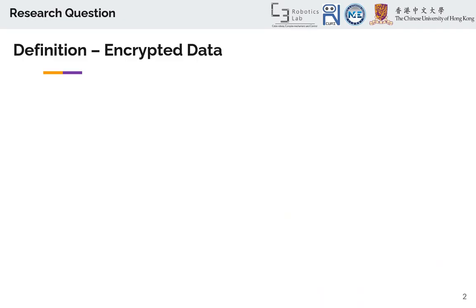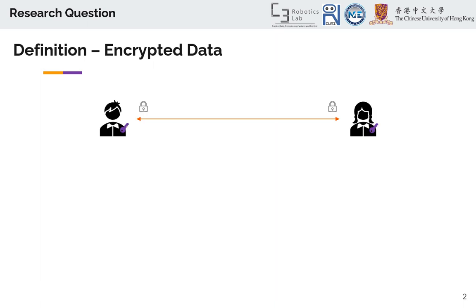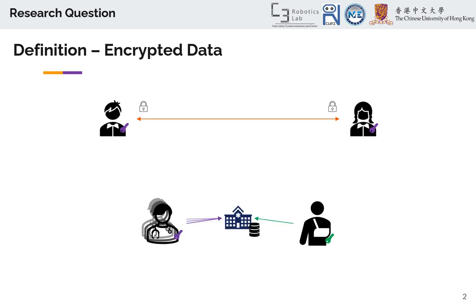First, what is encrypted data? Encrypted data means we have data that some entities should have access to and other entities should not. One example is end-to-end encryption, where two entities try to communicate with each other using secret and public keys over a public channel such as the internet, but they don't want other people to eavesdrop on what they're communicating. Another example would be databases where we are concerned about the privacy of our data or identification.